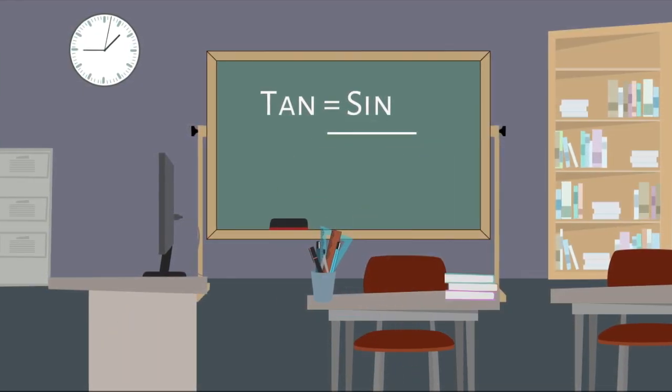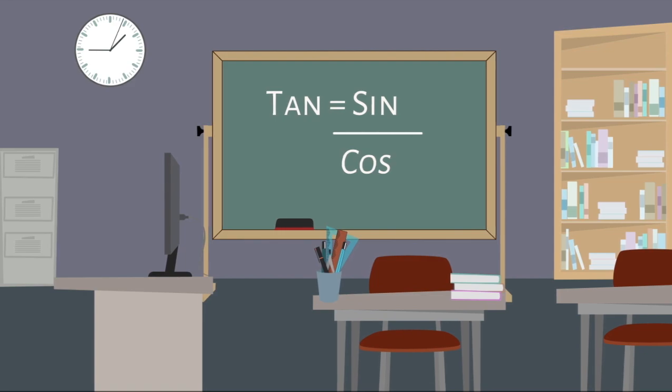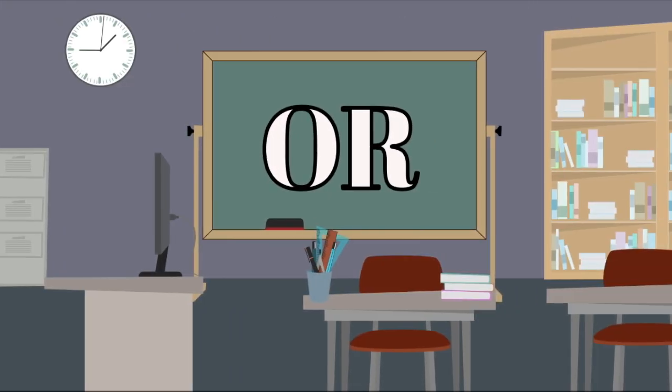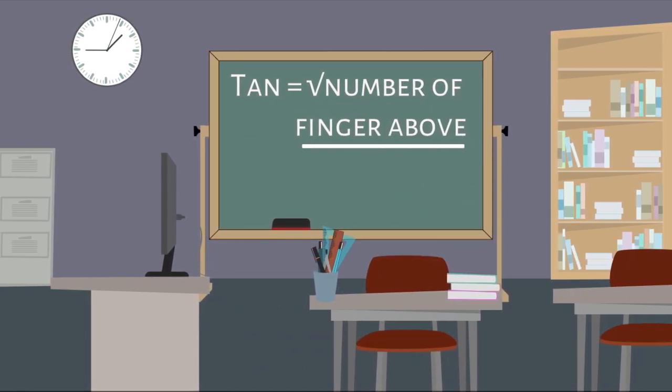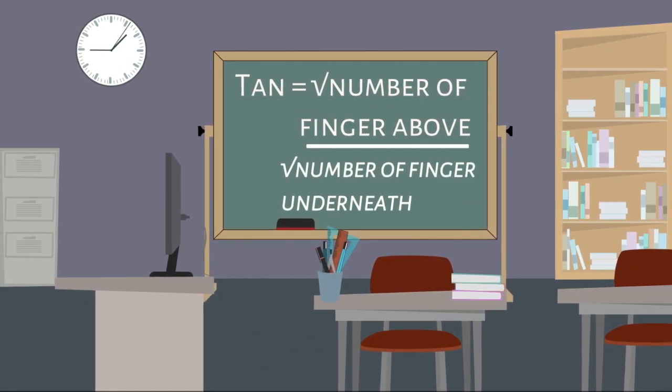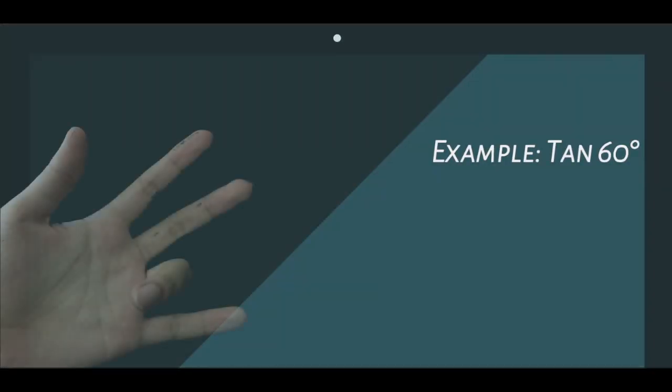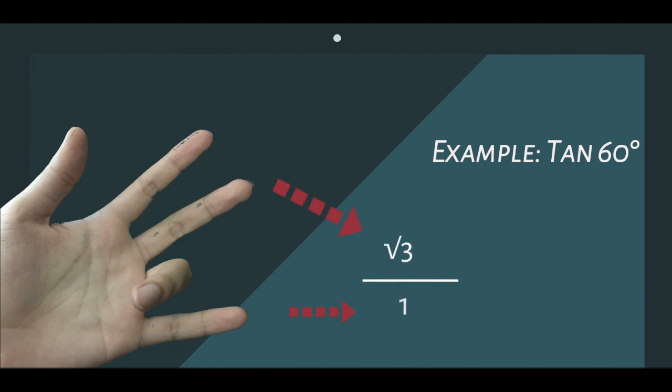Last, tangent will be sine over cosine, or we can say square root the number of fingers above divided by square root the number of fingers underneath. For example, tangent 60 degrees: we bend down our ring finger and we'll have three fingers above and one finger underneath, so it will be square root 3 over 1, or square root 3.